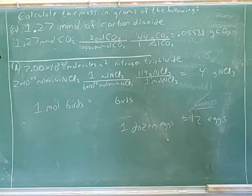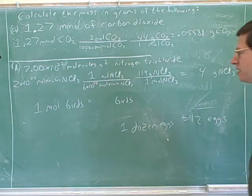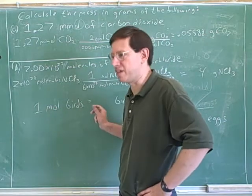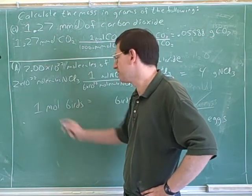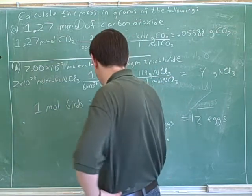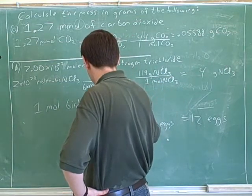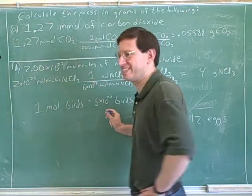So when I say 1, I should say 6 is equal to 6 times 10 to the 23rd. Right, because what is a mole? It's 6 times 10 to the 23rd. So if you say a mole of birds, you mean 6 times 10 to the 23rd birds. That's a heck of a lot of birds.